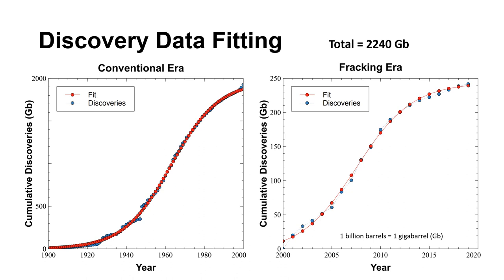Cumulative discovery data is better represented as the sum of two successive logistic curves. The first one, from 1900 to 2000, might be thought of as the conventional era, and the second one from 2000 onwards could be called the fracking era. It's likely that the same access to easy credit that led to the fracking boom also incentivized exploration. This isn't meant to suggest that discoveries post-2000 were all in shale fields, but that the underlying economic events led to both outcomes. By separating discoveries into the two eras, we see remarkably good fits to the data.